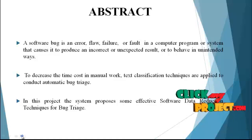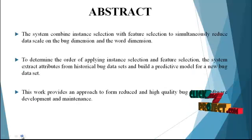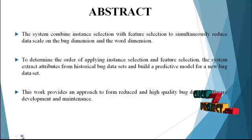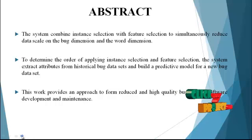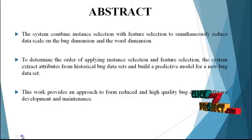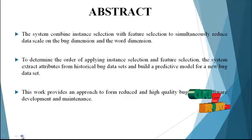In this project, the system proposes some effective software data reduction techniques for bug triage. The system combines instance selection with feature selection to simultaneously reduce data scale on the bug dimension and the word dimension. To determine the order of applying instance selection and feature selection, the system extracts attributes from historical bug data sets and builds a predictive model for a new bug data set. This work provides an approach to form, reduce, and high-quality bug data in software development and maintenance.